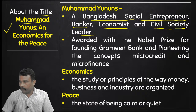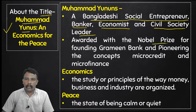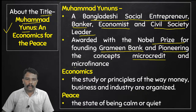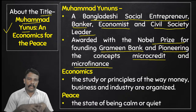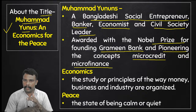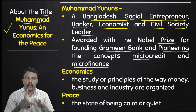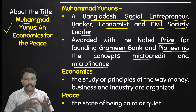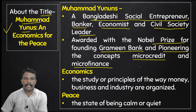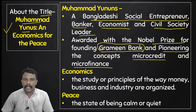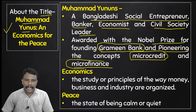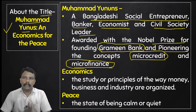He was awarded with the Nobel Prize for founding Grameen Bank and pioneering the concepts of microcredit and microfinance. Two points are very important here. Muhammad Yunus is a Bangladeshi social entrepreneur, businessman, banker, economist and civil society leader. He got the Nobel Prize for founding Grameen Bank and pioneering the concepts of microcredit and microfinance. What is the meaning of Grameen Bank? It is for rural areas. Microcredit means small credit, then microfinance — macro and micro. You are students of commerce, you need to understand this properly.